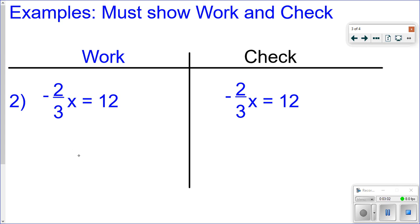So to get the x by itself, we can multiply both sides by the reciprocal of negative 2 thirds, which would be negative 3 halves. So again, the reciprocal, you just flip it over. If it's negative, you keep the negative. Don't change the sign.